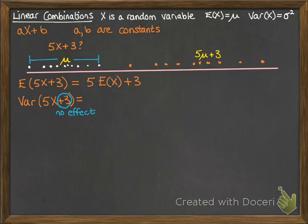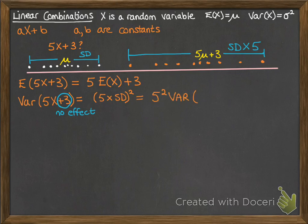So what does happen to the variance? If you think about the spread of the new distribution 5x plus 3, the original one had a standard deviation away from the mean, and that standard deviation gets multiplied by 5. How each of those dots are spread from the mean is measured by the standard deviation, so now each dot will be spread 5 times more. Since standard deviation gets squared to give the variance, we do 5 squared times the variance of x.